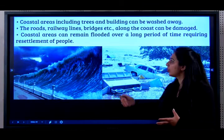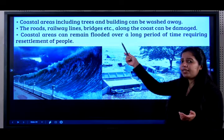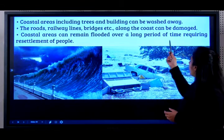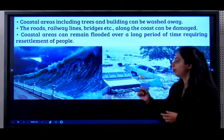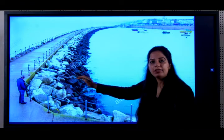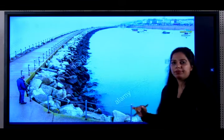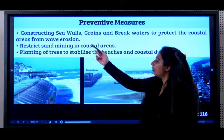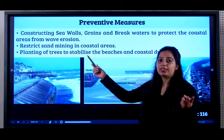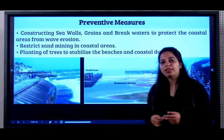What are the effects of coastal erosion? Coastal areas including trees and buildings can be washed away. Roads, railway lines, and bridges along the coast can be damaged. Coastal areas can remain flooded over a long period, requiring resettlement of people. A breakwater prevents seawater from causing a landfall. Seawalls, groins, and breakwaters can protect coastal areas from wave erosion. Also, restrict sand mining — there has to be adequate sand to prevent sea erosion. Lastly, planting of trees.